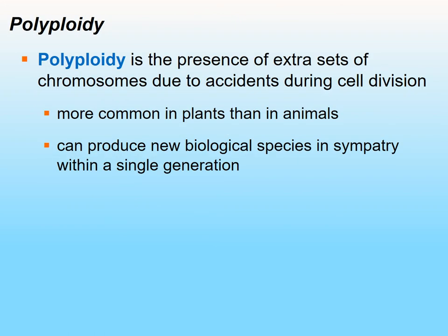Polyploidy is the presence of multiple sets of chromosomes, and it usually occurs due to mistakes during cell division. It is often very common in plants — more common in plants than animals. It can produce whole new biological species within the same area, within a single generation.